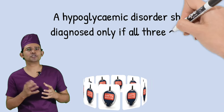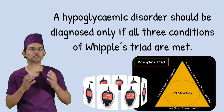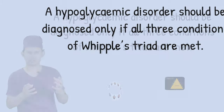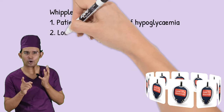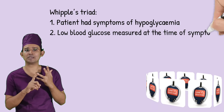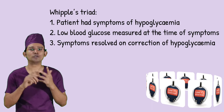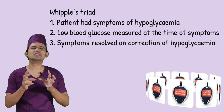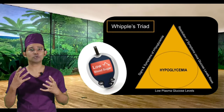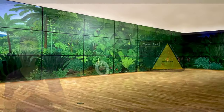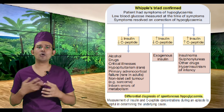A hypoglycemic disorder should be diagnosed only if all three conditions of Whipple's Triad are met. Number one: the patient has symptoms of hypoglycemia. Number two: low blood glucose is measured at the time of symptoms. Number three: symptoms resolve on correction of hypoglycemia. When all three criteria are met, we confirm this as Whipple's Triad.